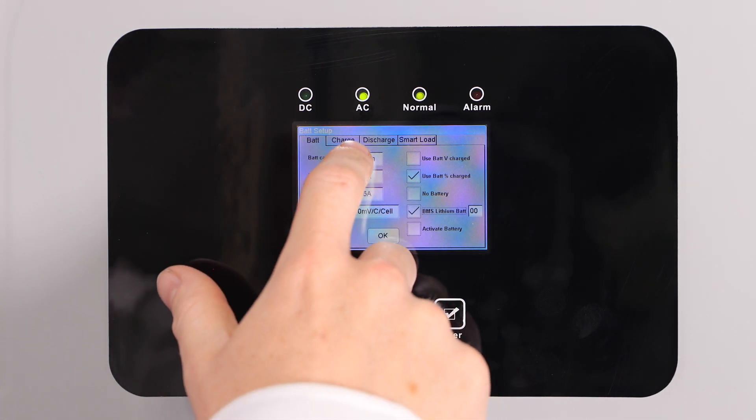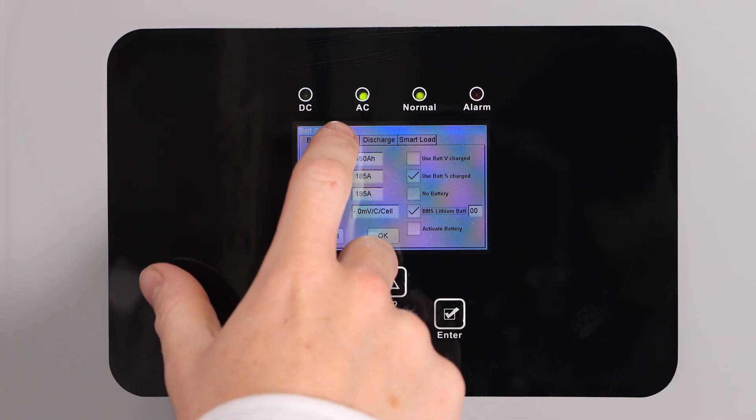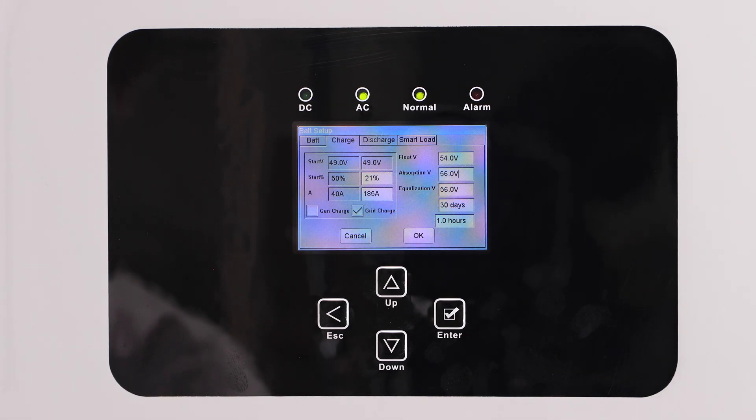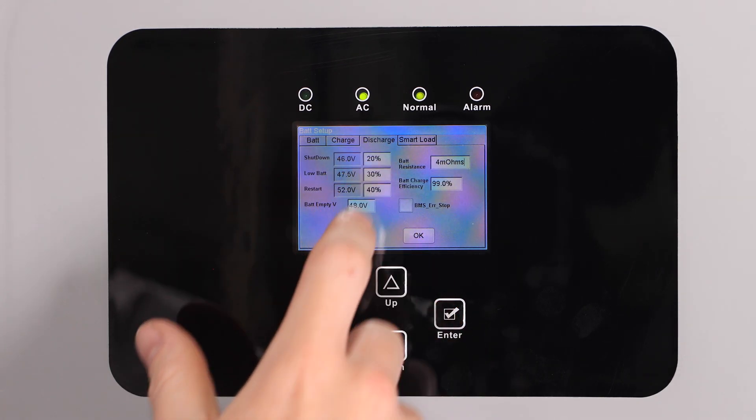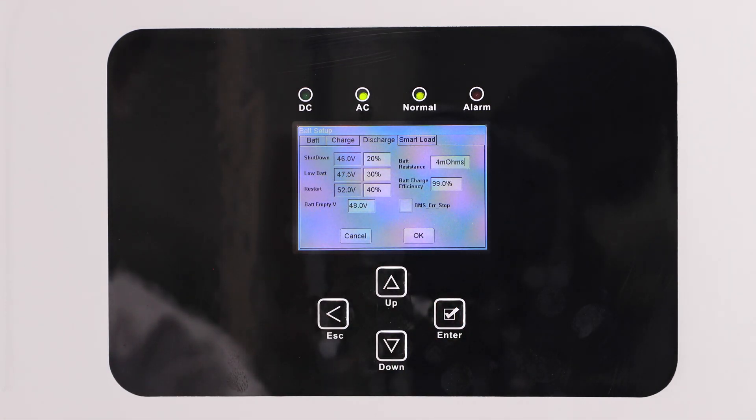Next, check the use battery percentage charged box and move to the charge tab. Change the start percentage to 21%, but all the other settings should auto populate, so go ahead and move to the discharge tab.